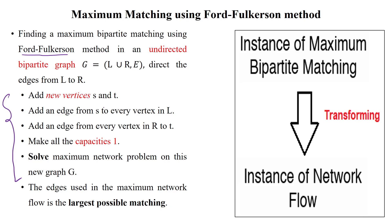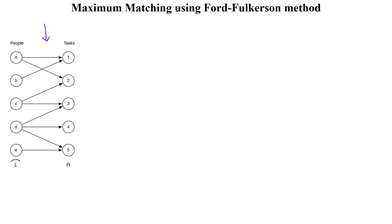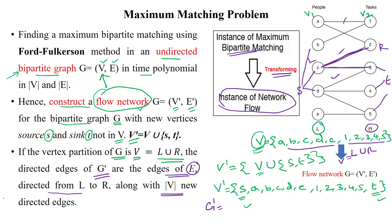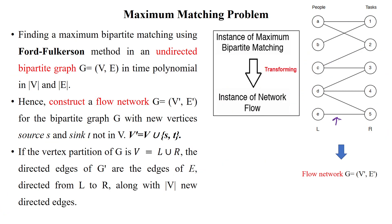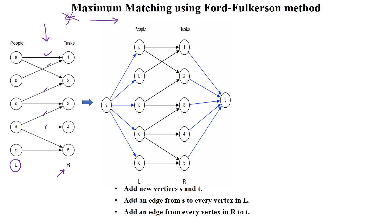The steps are as follows. First, check the bipartite graph: subset L has five vertices and subset R has five vertices. The edges are made into directed edges — previously they were undirected. We make them directed because in the flow network we only use the forward direction. Then we add new vertices S and T: S on the left side, T on the right side.